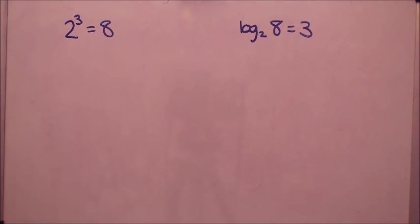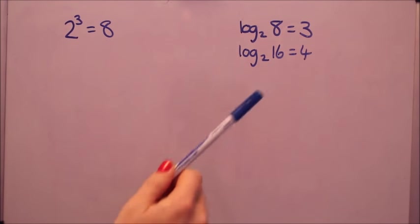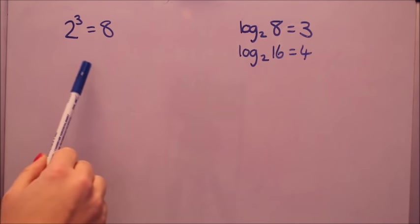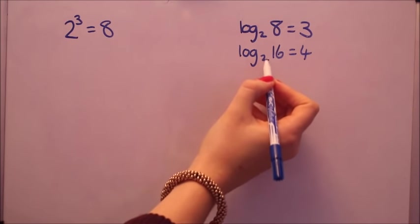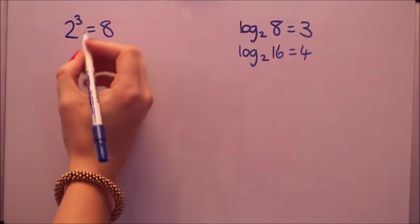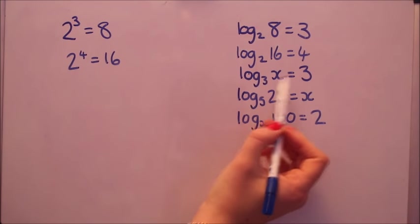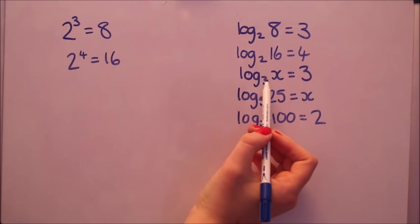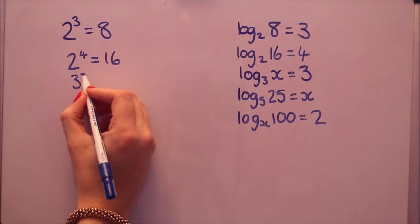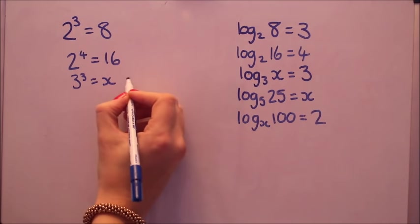Now I'm going to give you a log and we'll go back into the power form. If we were going to write this as a power, start with the base, hop over and come back. 2 to the power of 4 equals 16. In the same way, I'm now going to write some with x in and I want you to find x. So for these ones, I'm going to rewrite them in the power form. So starting with the base, 3 to the power of 3 equals x. That's 27.